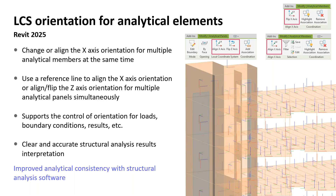Now the analysis key theme: in Revit 2025, you can use local coordinate system tools for analytical members and panels to align axis orientation and direction. You can change the alignment of the X-axis orientation for multiple analytical members at the same time, use a reference line to align the X-axis orientation, or flip the Z-axis orientation for multiple analytical panels at the same time. This supports control of orientation for loads, boundary conditions, results, and more, giving a clear understanding of orientation for accurate structural analysis results interpretation.